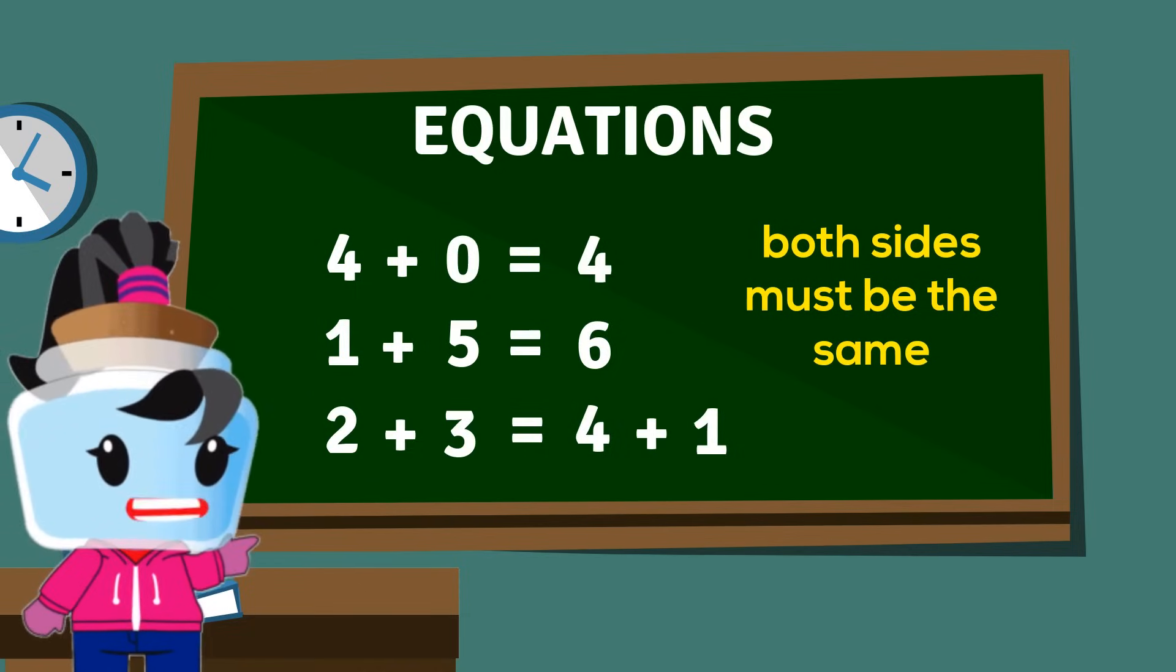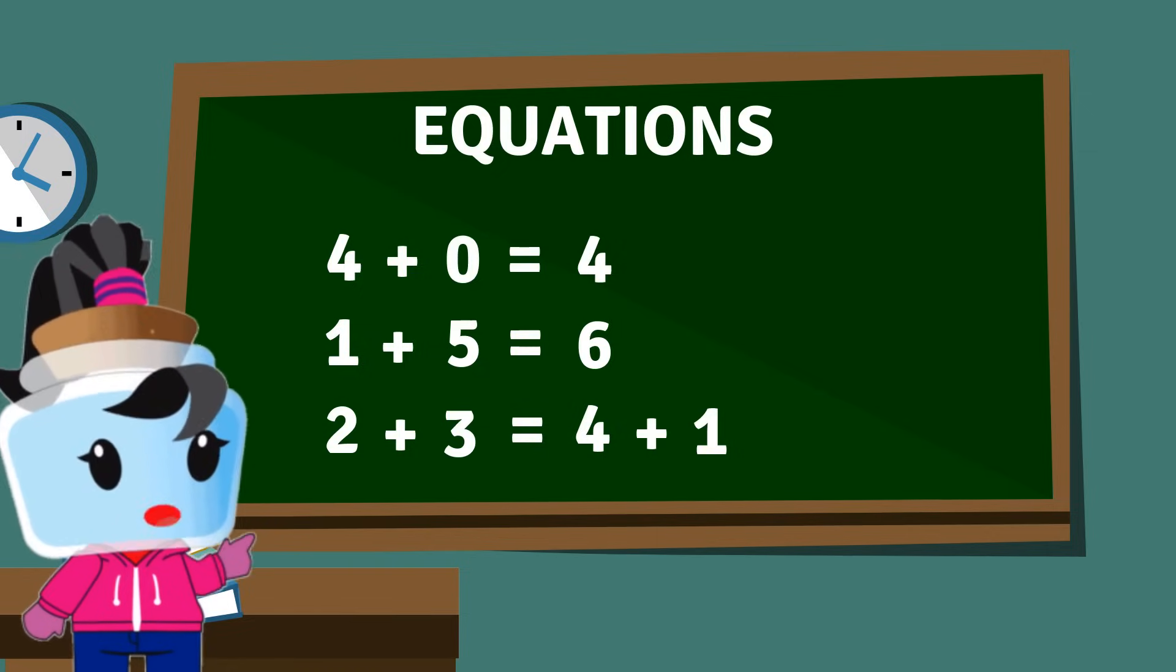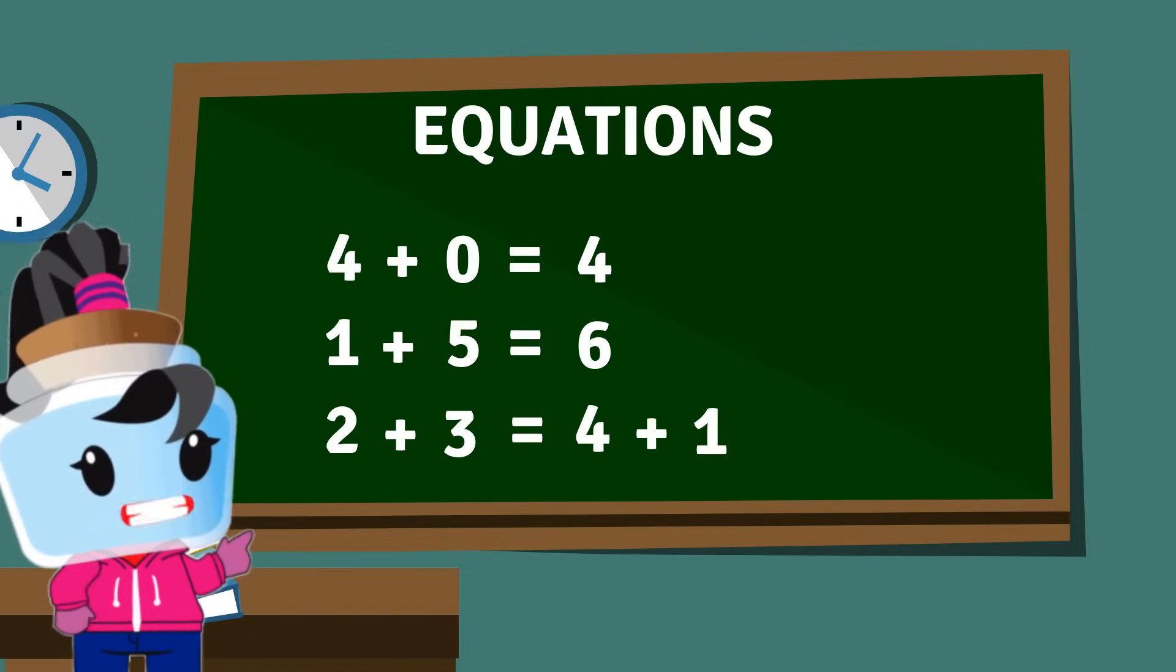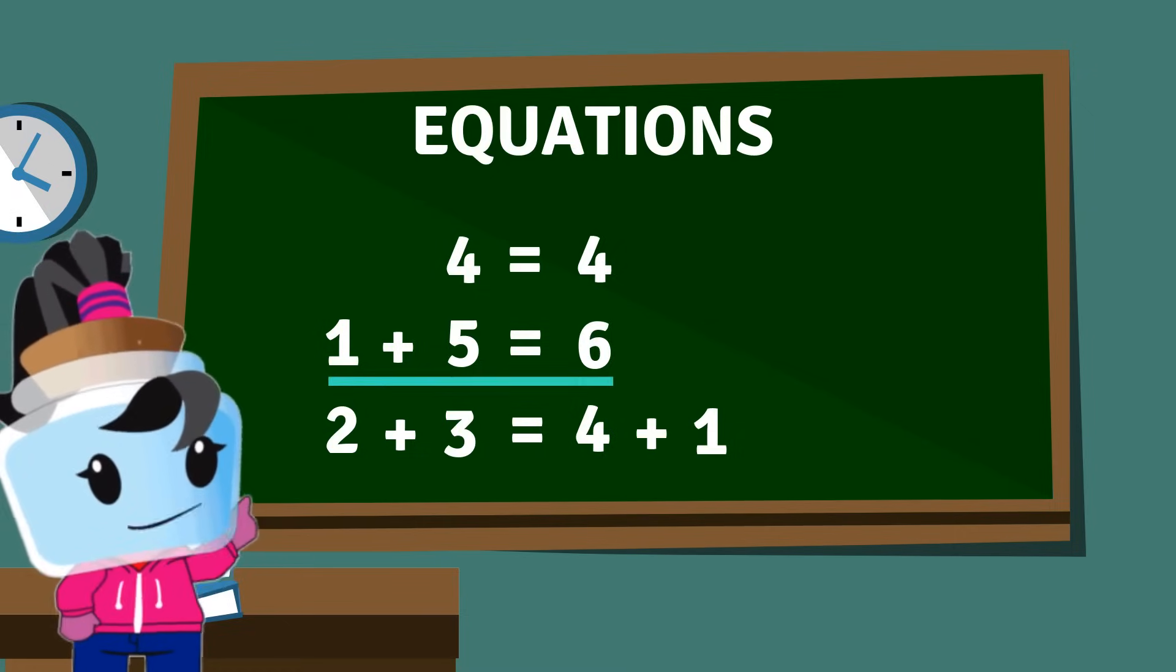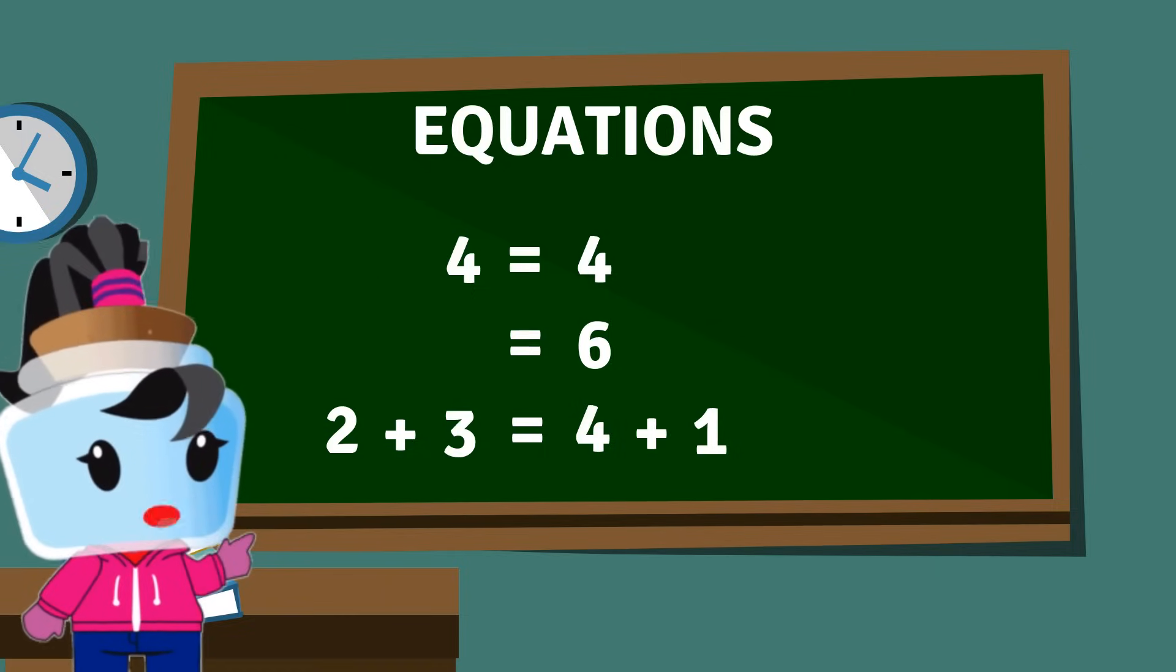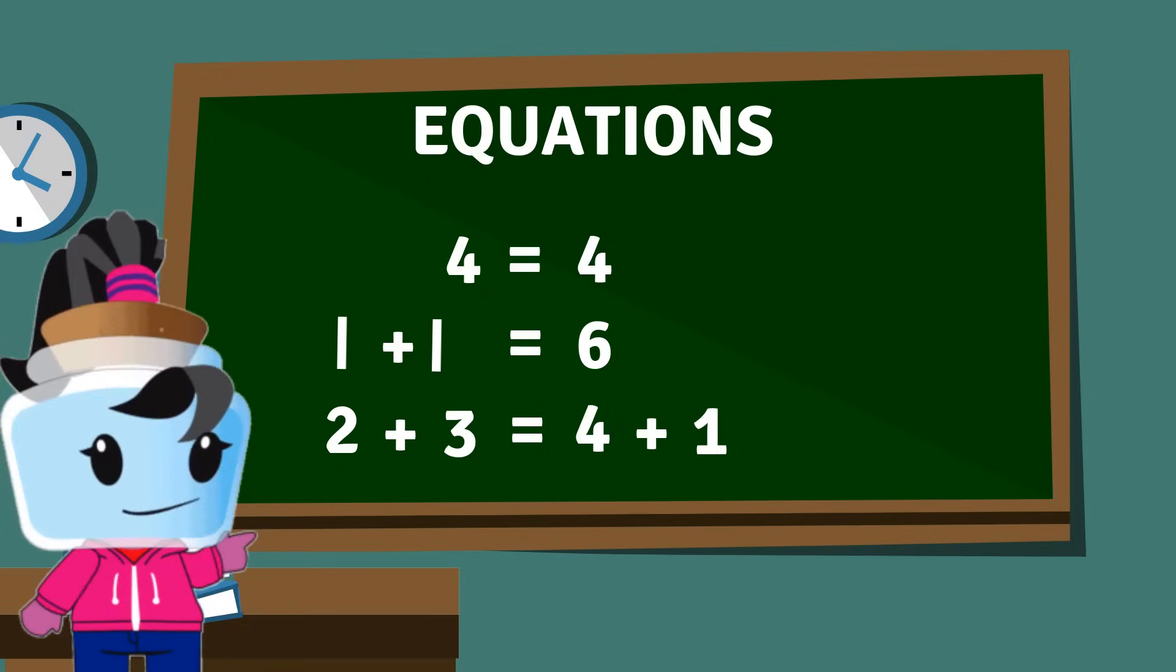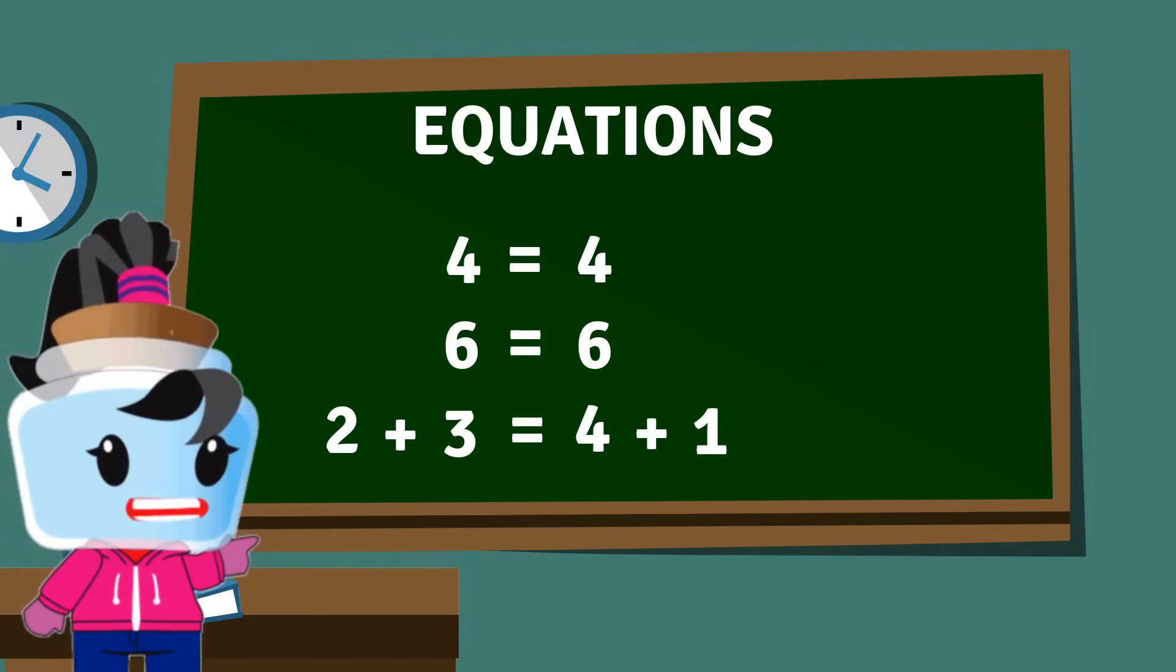Let's go through each example and see how it works. 4 plus 0 equals 4 is an equation because the value on the left side is the same as the right side. 1 plus 5 equals 6 is an equation because if 1 plus 5 is solved, 1 plus 1, 2, 3, 4, 5, the answer is 6, which is the same as the other side of the equal sign.